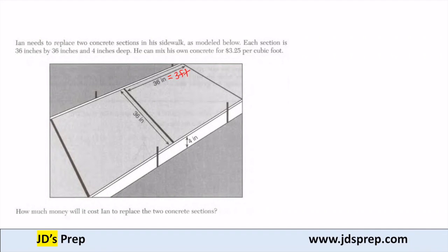Same thing with the other side. If I have 36 inches here, this equals 3 feet. And finally, if I take the depth and divide that by 12, that equals a third of a foot.